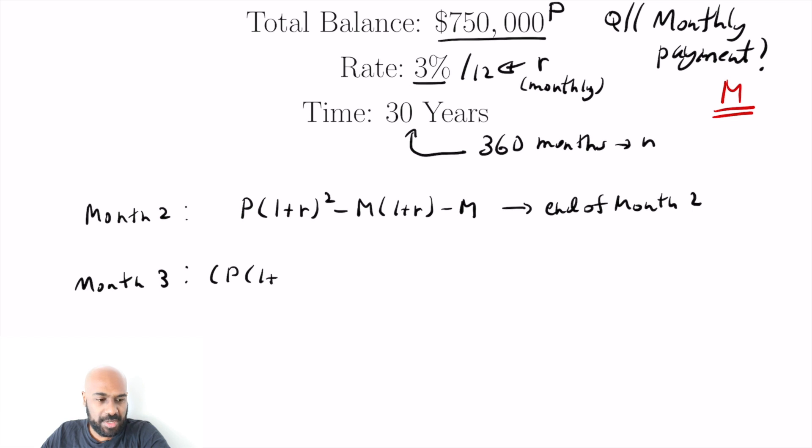So we play the same game again. Month three, we write down what we had at the end of month two. That's the beginning of what we have at month three. We multiply by our interest again, one plus R, and then we subtract off this monthly amount that we're paying, which is M. So again, this is this first bracket is the month three start, which is the month two end balance,